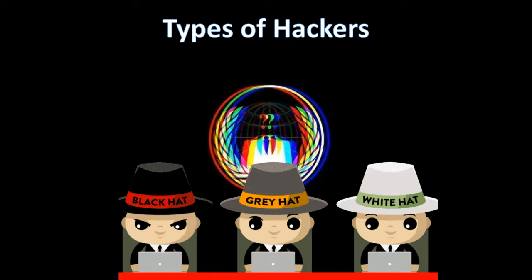Also known as ethical hackers, white hat hackers employ the same hacking methods as black hat hackers — with one exception: they do it with permission from the owner of the system first, making the process completely legal. Gray hat hackers are a blend of both — they will look for vulnerabilities in a system without the owner's permission or knowledge. If issues are found, they report them to the owner, sometimes requesting a small fee. If the owner does not respond, the hacker may post the exploit online. This type of hacking is still considered illegal since no permission was obtained.